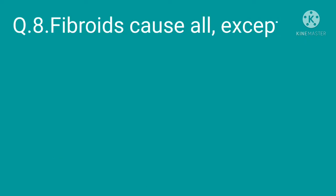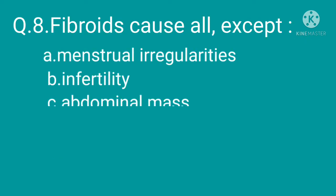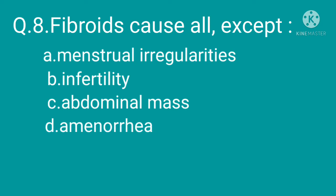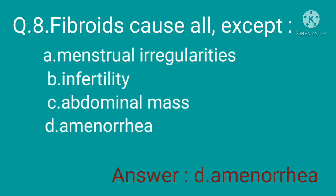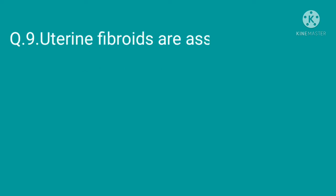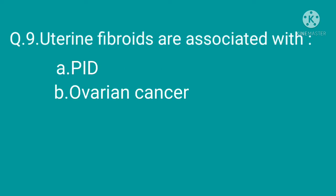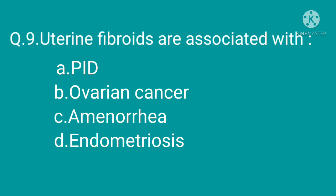Question 8: Fibroids cause all of the following EXCEPT — option A: menstrual irregularities, option B: infertility, option C: abdominal mass, option D: amenorrhea. The correct option is option D, amenorrhea.